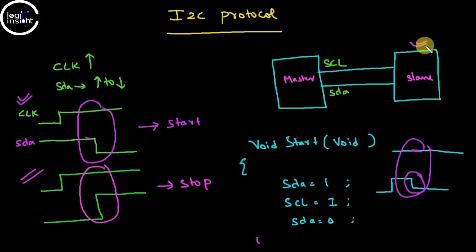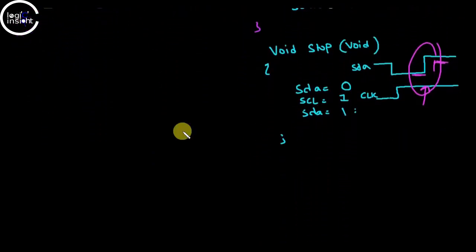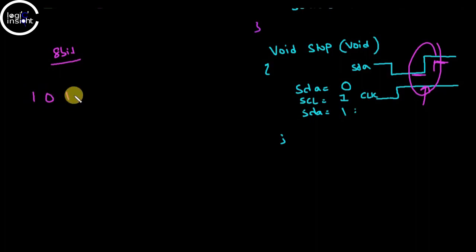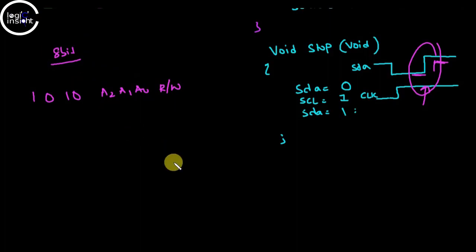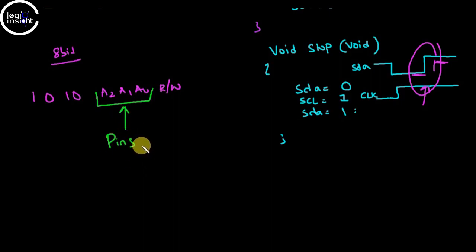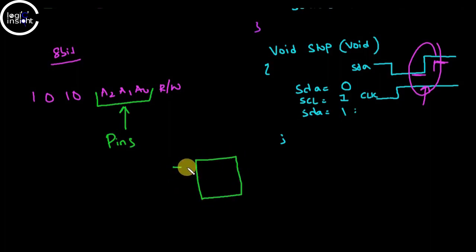As discussed in the previous lecture, every device has an address. For our EEPROM device, the address consists of eight bits: the first four bits are fixed as 1-0-1-0, and the next three bits are A2, A1, A0 which are under programmer control, plus a read/write bit. A2, A1, A0 are not registers — they are physical pins that must be connected to VCC or ground to set them to 1 or 0. This gives us up to eight uniquely addressable devices.